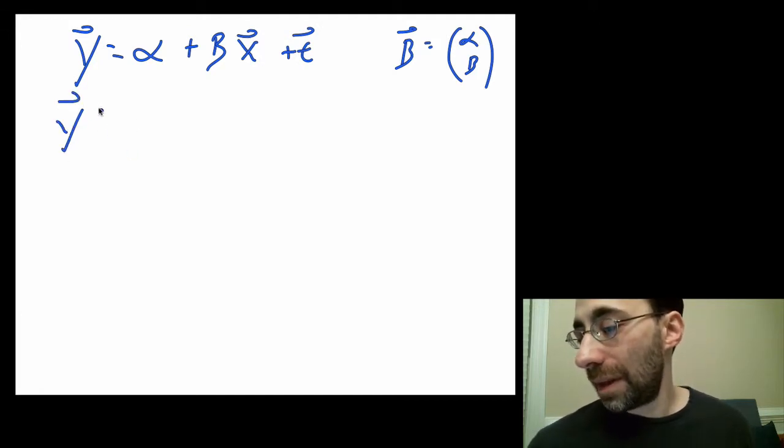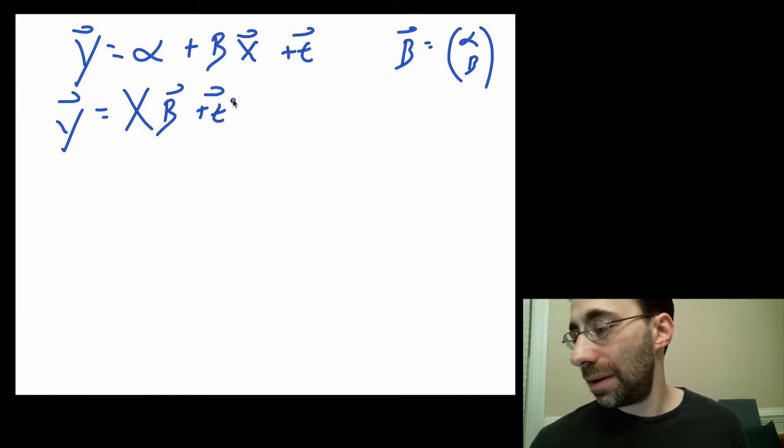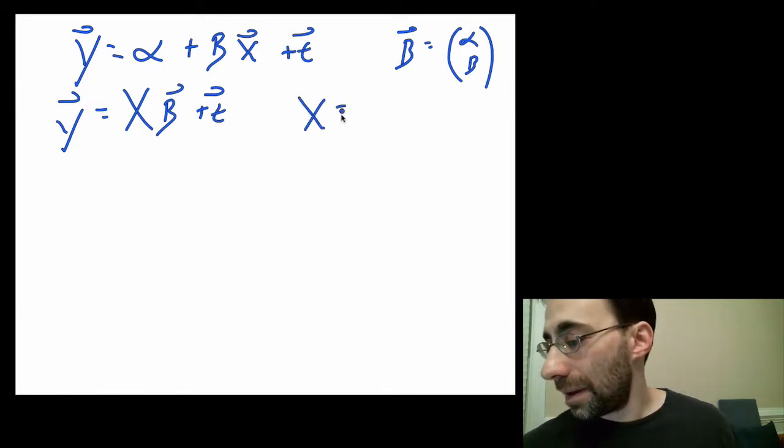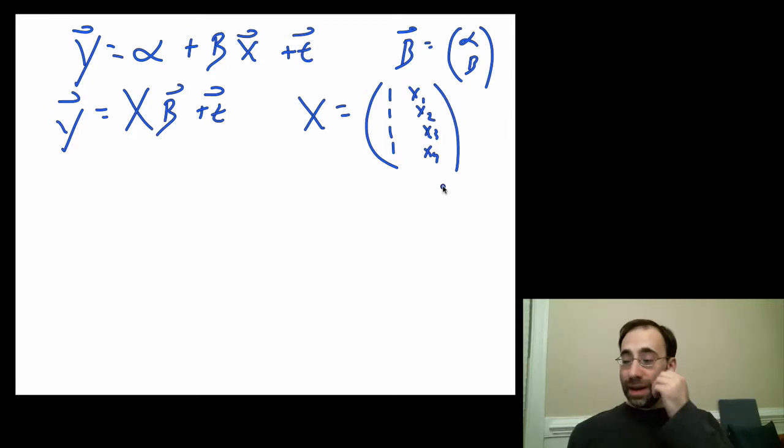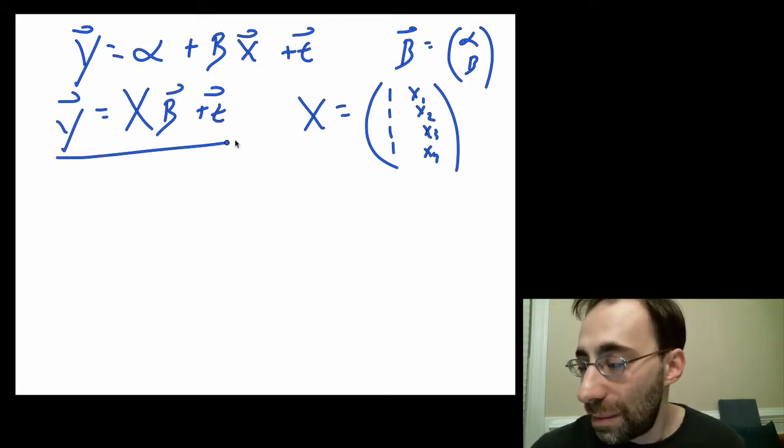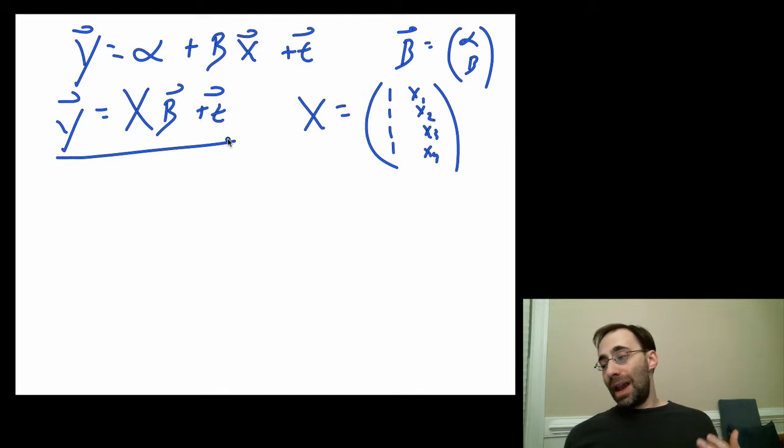Then we can write this whole thing as y equals matrix X times a vector beta plus epsilon. Here X is written as the matrix that's made by putting ones in the first column and all the components of the vector x in the second column. You get the exact same thing you had before, and you enable yourself to express your linear model in a nice, more compact way. If you have more independent variables, you can keep adding columns to X and having more rows on beta.